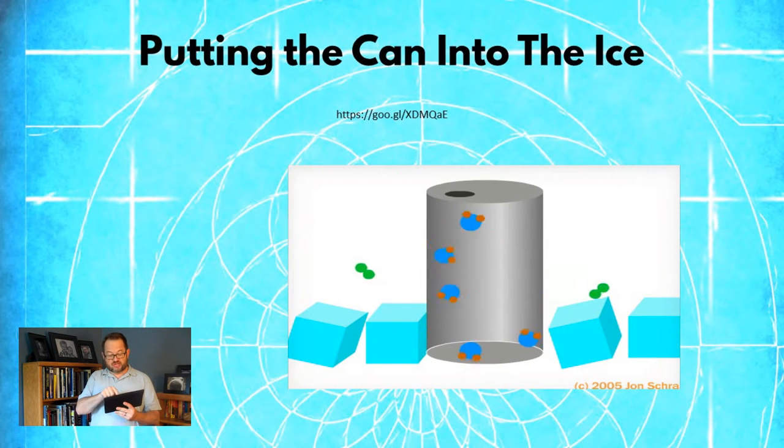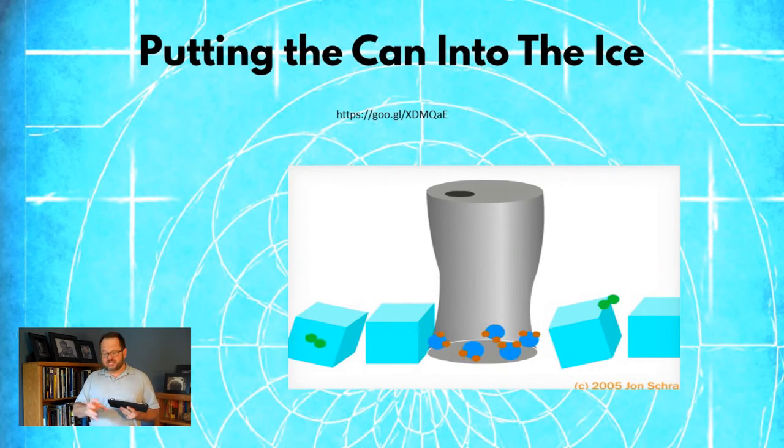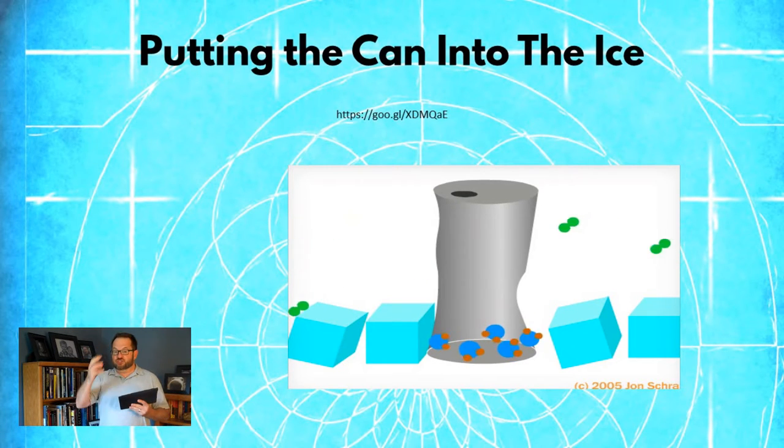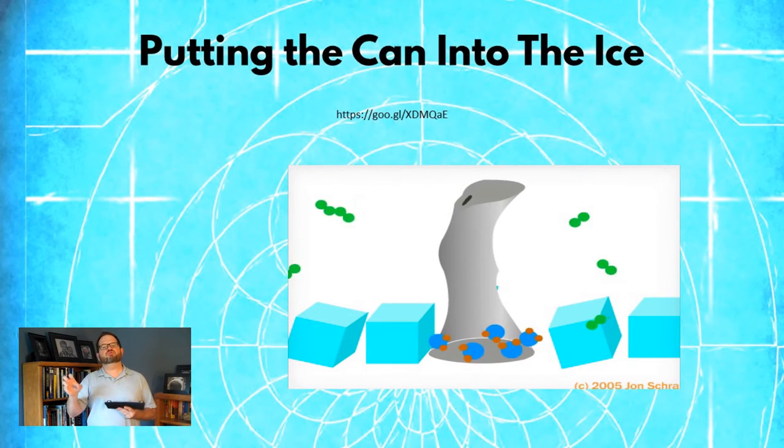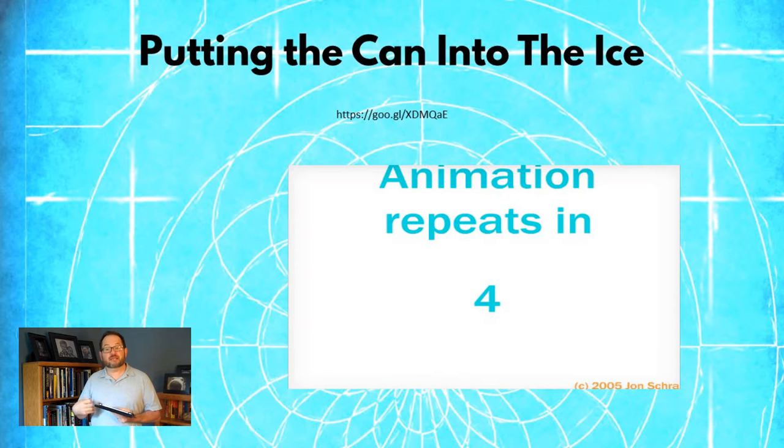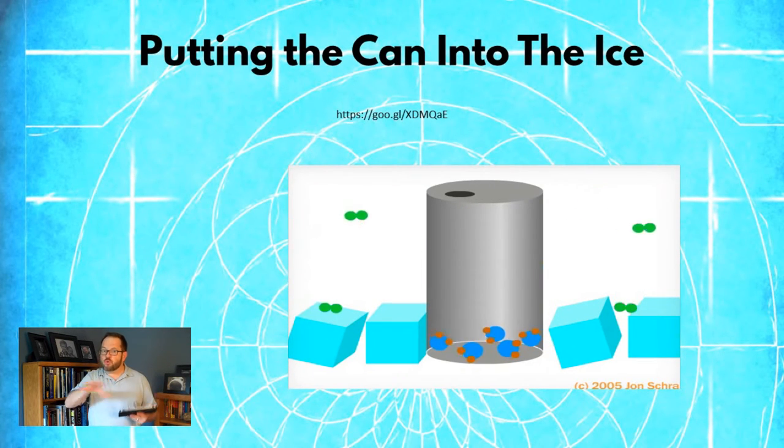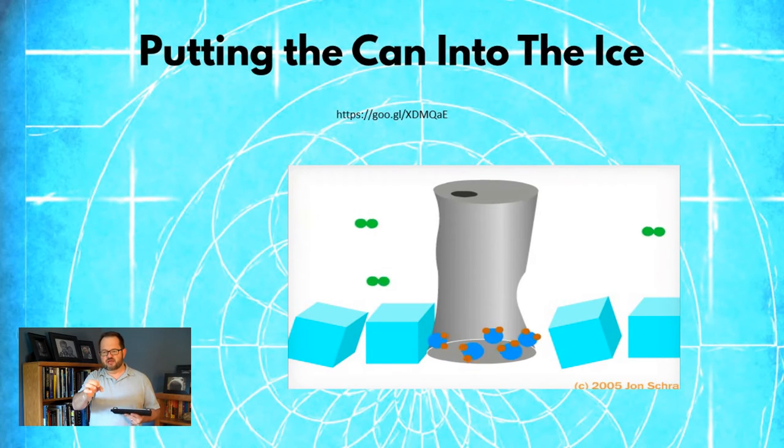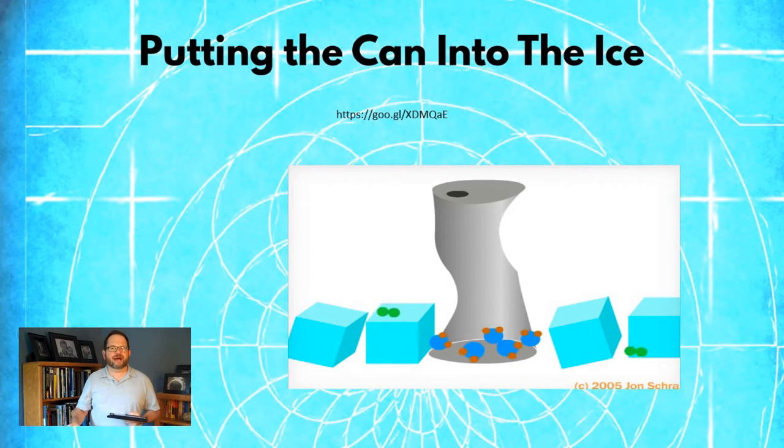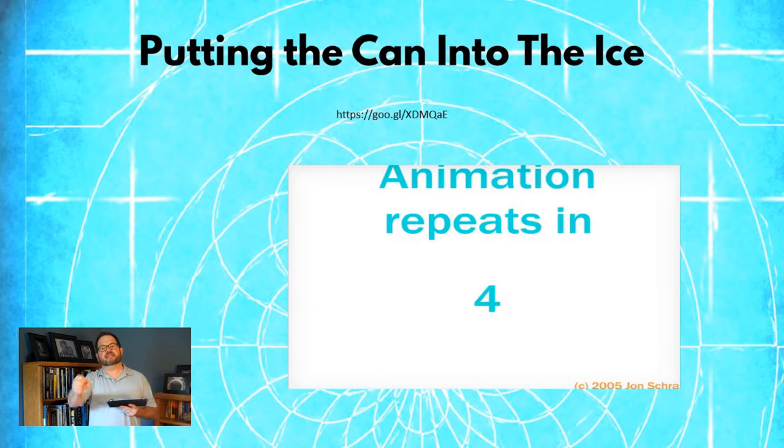Then we're going to transfer that can over to the ice. As you saw when we watched that video, once the can hit the ice it crushed. What actually happens here is once you put the can into the ice, the can cools quickly and the steam that's inside the can quickly changes back into liquid water, which means for a short period of time there's no gas inside of the can. Quickly air is going to flow back in through the opening at the top of the can, but it all happens too fast. For a short period of time there's a vacuum inside the can because we have changed the steam inside the can back into a liquid.